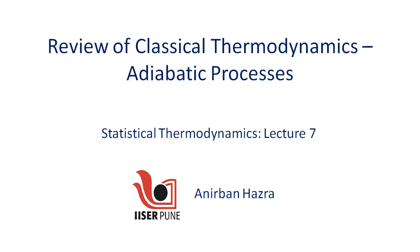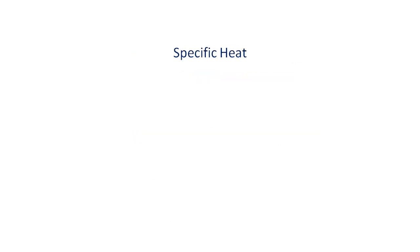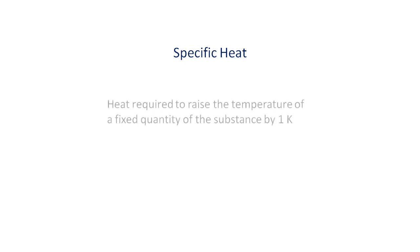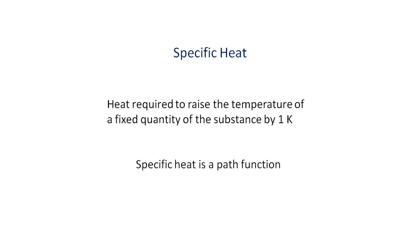As we have seen in an earlier lecture, the specific heat of any substance is the heat required to raise the temperature of a fixed quantity of the substance, say one mole of it, by one kelvin. The specific heat depends on how the state of the system is changed. Heat absorbed can increase the temperature of a substance, but it can also do work and not increase the temperature, or it can do both. Specific heat is therefore a path function.